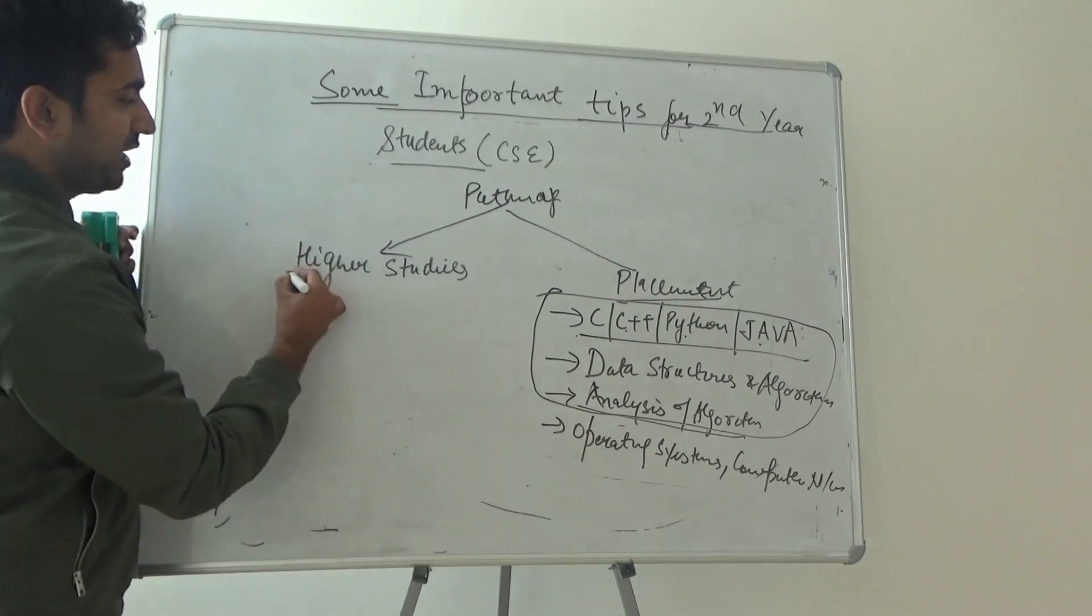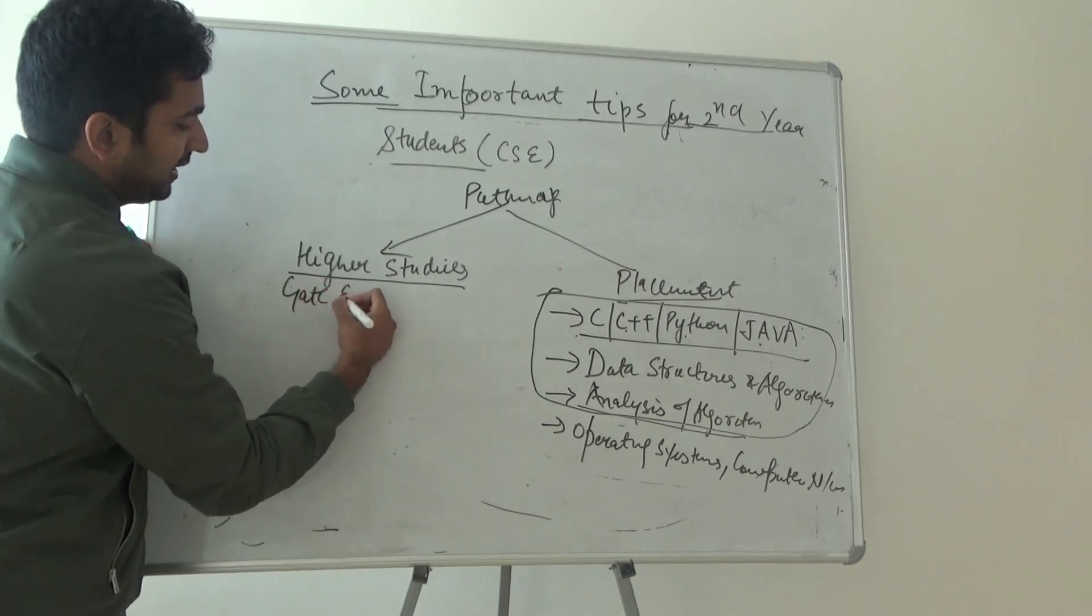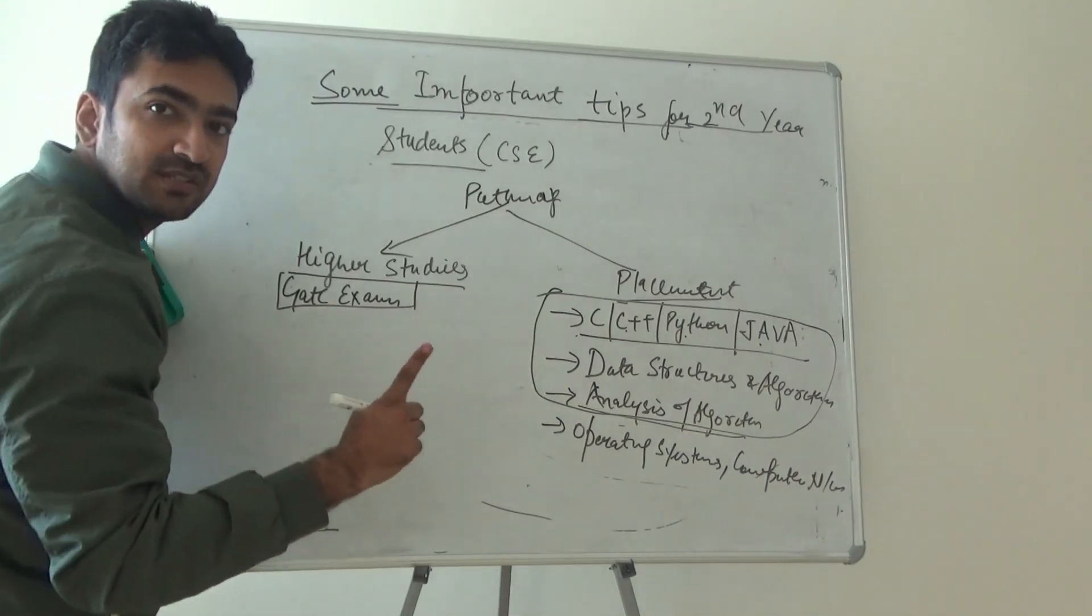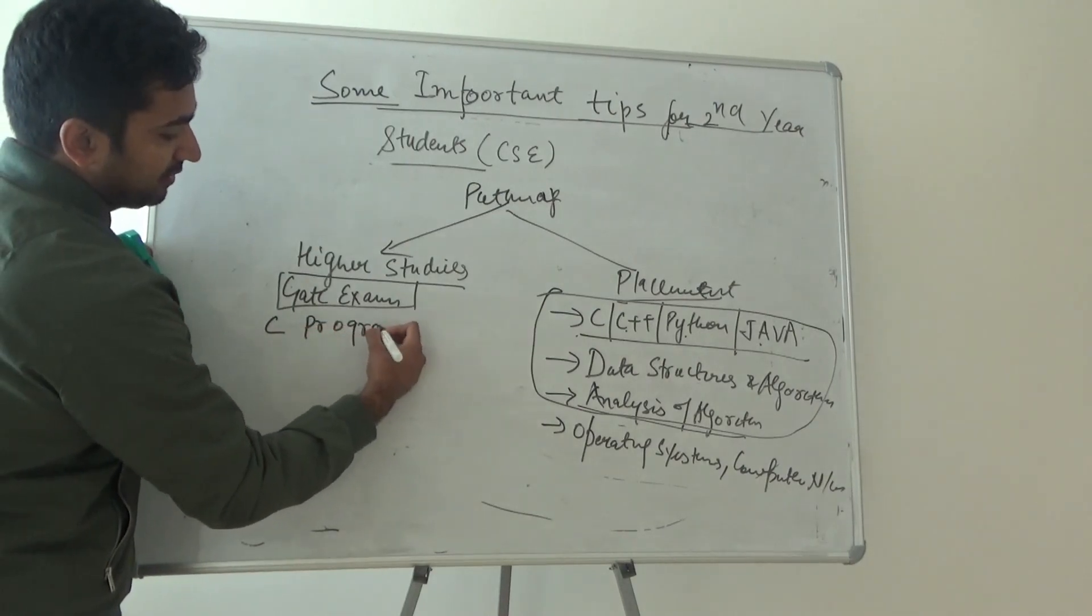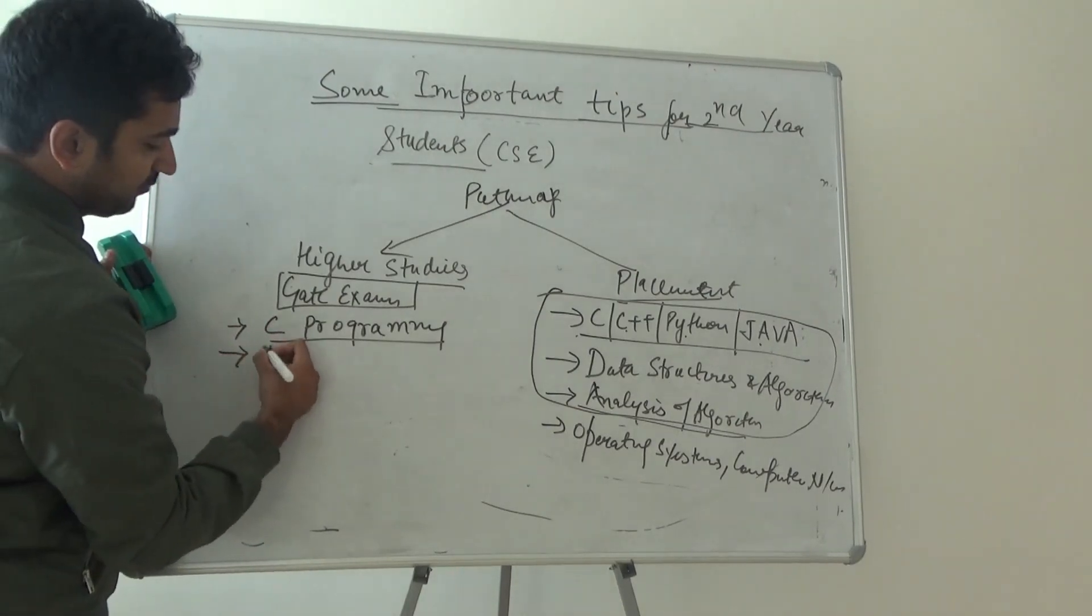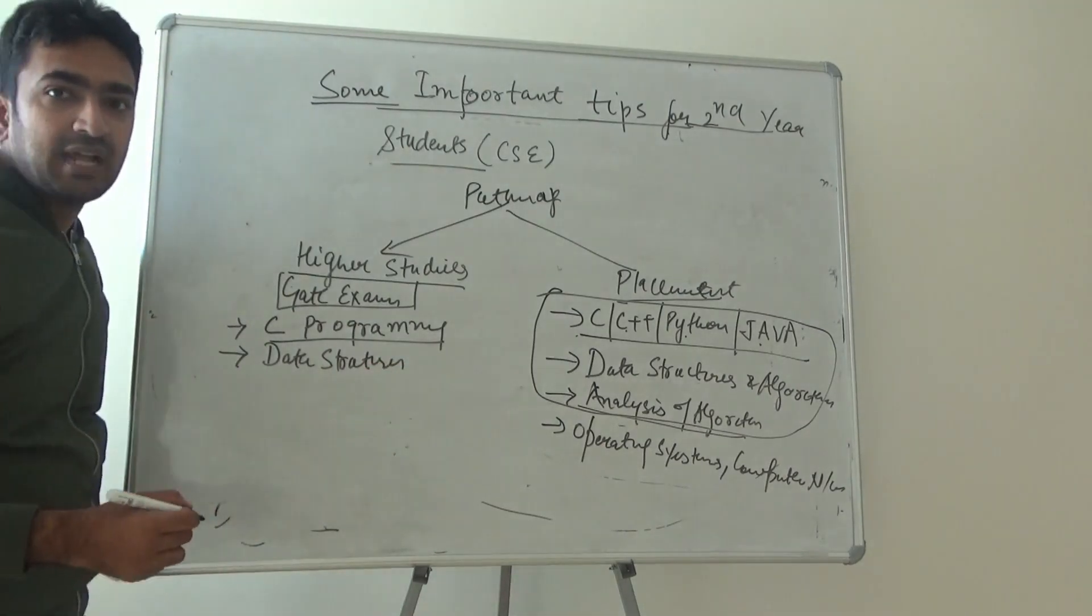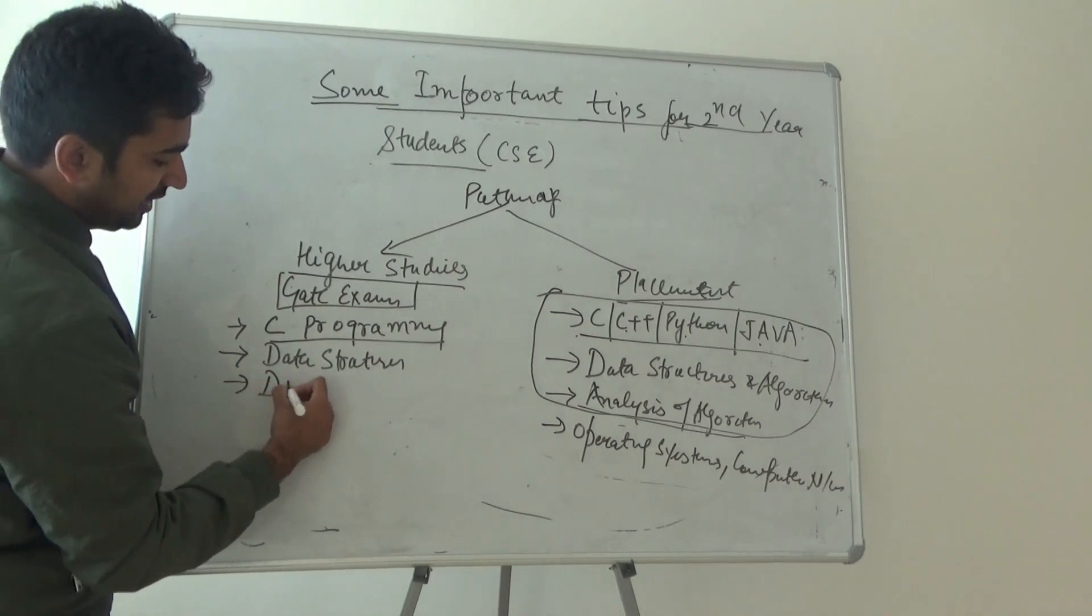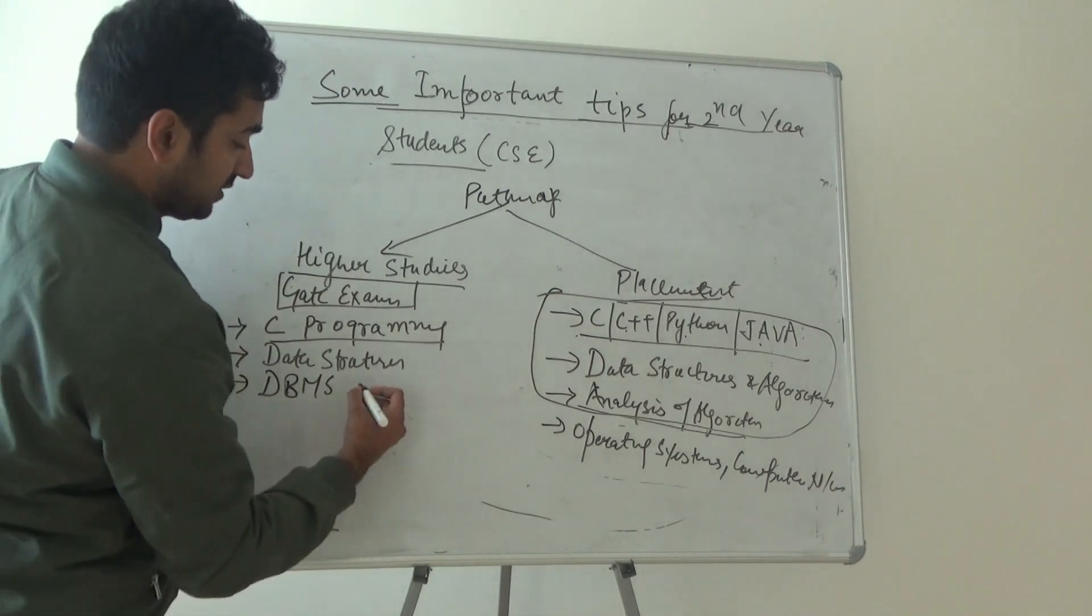Now coming to another pathway, which is higher studies. When you're talking about higher studies, it means you want to clear the GATE exam or study masters. In that scenario, there are many important subjects like C programming—you should have good knowledge of C programming. You should have good knowledge in data structures because GATE exam questions ask about data structures. DBMS—database management system—is also a very important subject that comes in GATE.